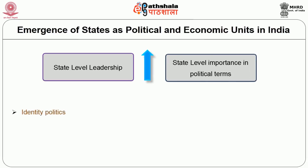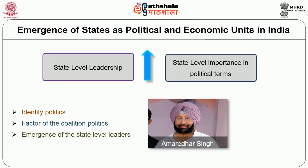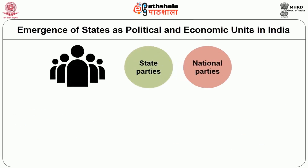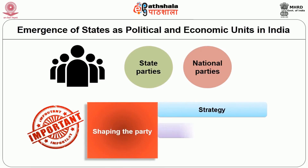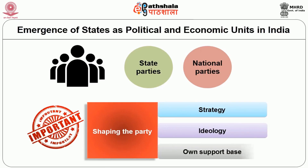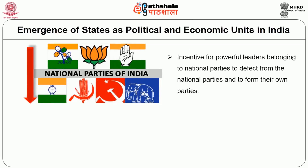So I have referred to identity politics, coalition politics, and the emergence of state-level leaders — like Amarinder Singh from Punjab, a Congress leader — who play a very important role in shaping party strategy and ideology, and have their own support base. With the decline of national parties, there is great incentive for powerful leaders belonging to national parties to defect and form their own parties.